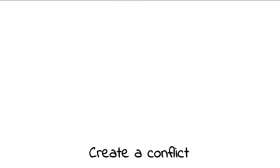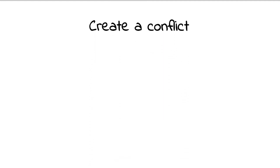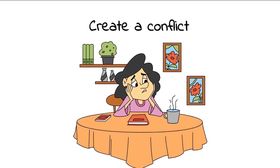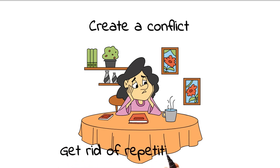Tip 3: Create a conflict. Every short story needs to have a single point of conflict. The character should have either a dilemma, a revelation, or be faced with a decision of some kind. Conflict and tension keeps your audience engaged and invested in your story. Get rid of repetitive words. Don't spend too much time setting scenes, because a short story needs to come to a relatively quick conclusion.